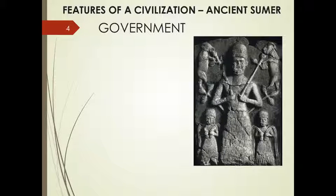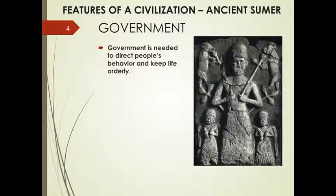Another extremely important feature of a civilization developed in ancient Sumer for the very first time in human history was government. Government is needed to direct people's behavior and keep life orderly. If you don't have police, a system of education, schools, and a military, life can become extremely disorderly, and disorder makes it difficult for civilization to function.